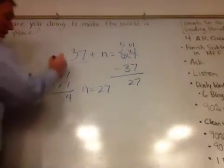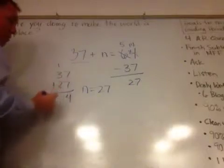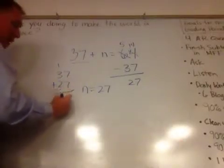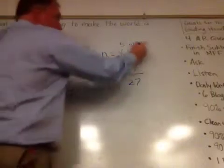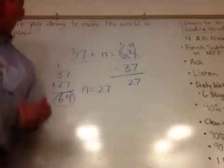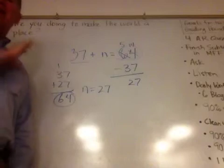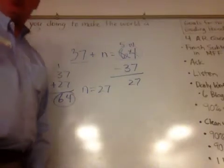7 plus 7 is 14. Carry the 1. 1 plus 3 plus 2 is 6, and we have 64 here, and we have 64 here, and we know we've got it right. So that is one way of doing a simple missing number problem.